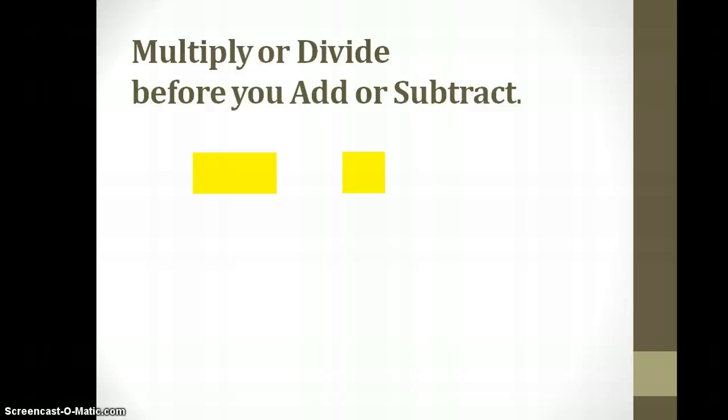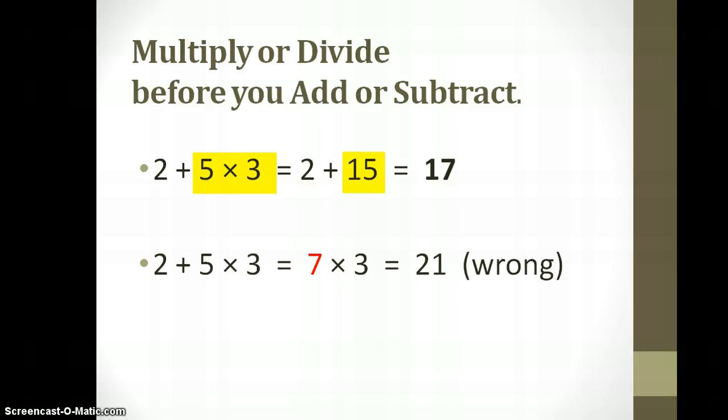Multiplying and dividing is next. You will multiply and divide before you do any adding or subtracting. Now, it's not necessarily in that order. Sometimes you have to divide first if it's on the left side because multiplying and dividing are on the same stair. So multiplying is the one in this particular example. So you would have had to do 5 times 3 before you would do the plus 2. So if you tried to add first, you would have gotten 7 times 3 and that would be wrong. You have to multiply and divide before you do any adding or subtracting.